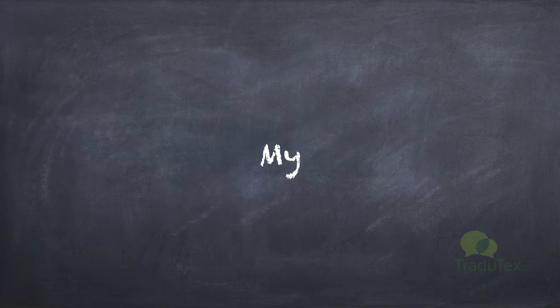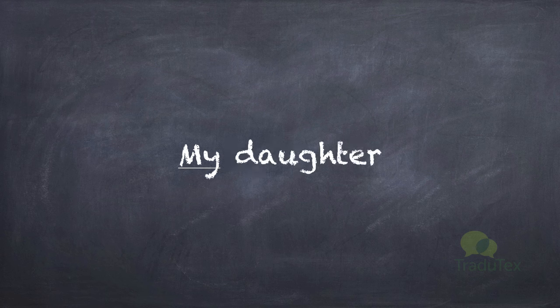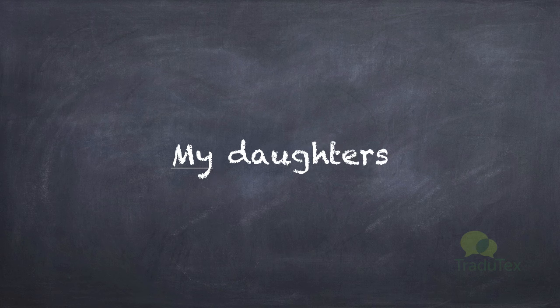We are going to focus on the English possessive, 'my'. Let's first see how this word 'my' works in English. We can say, for instance, 'my son', but we will use exactly the same word to say 'my daughter', 'my sons', or 'my daughters'. So in English, it's not too complicated. We have one word, even if the following word is masculine, feminine, or masculine plural, or feminine plural.